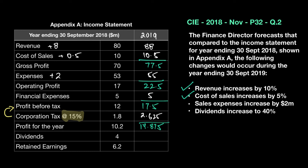Now looking at the dividends change — dividends are at 40%. The dividend will be charged on the profit for the year, which is 14.875. 14.875 times 40% tells me the company will be paying a total dividend of 5.95. Deducting that: 14.875 minus 5.95 gives me retained earnings of 8.925.